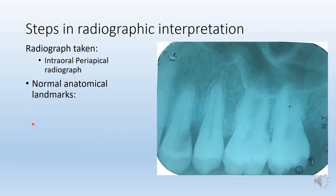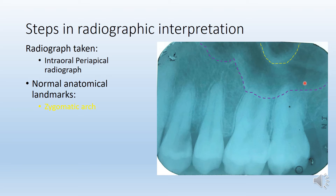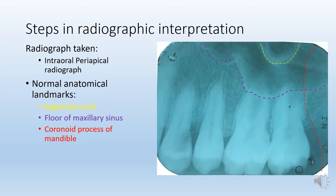Let's look at this radiograph. First of all, we need to analyze that it is an intraoral periapical radiograph and from the appearance, it looks like it is the second quadrant. The normal anatomical landmarks seen here are: the yellow line which is your zygomatic arch, the purple line which is the floor of the maxillary sinus, and another shadow in the posterior part which is the coronoid process of the mandible — visible on most posterior maxillary molar radiographs.